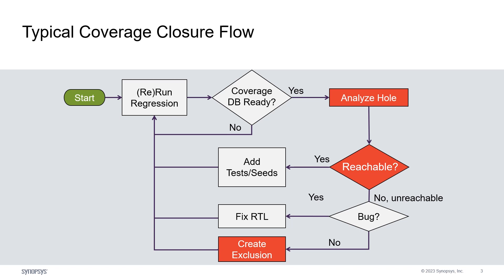If there are uncovered goals, verification engineers need to spend time to determine whether they are reachable. If they are reachable, additional test cases need to be created and added to regression to hit those goals. If a goal is not reachable, it could be because of an RTL bug in the design that leads to dead code, and hence the bug needs to be fixed.